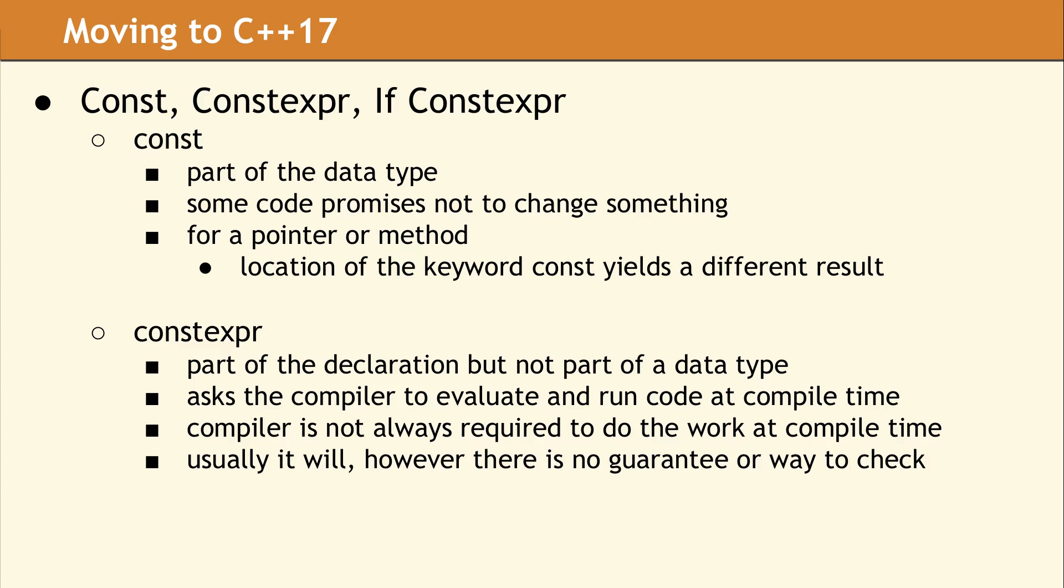When const is part of a pointer or method declaration, there are multiple locations where const can appear, and each one will indicate a different entity which cannot be changed. Sometimes const means the return value cannot be changed by the caller. Other times const indicates the method cannot change any data members in the class. Our takeaway here is that const on its own does not say what cannot change. You need the full context.